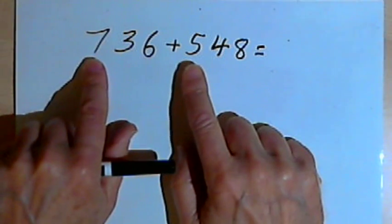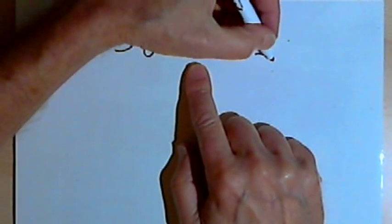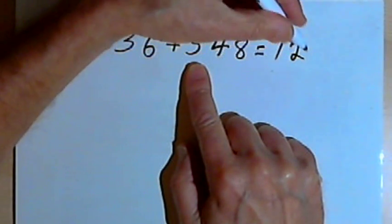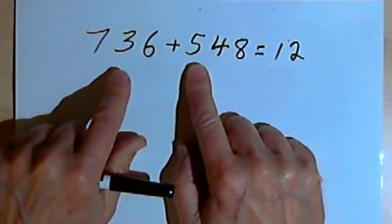So I can take that 7 and 5, the 700 and the 500, and write down 12, which is going to become 1200, but I want to add more numbers to it.